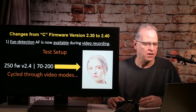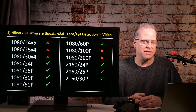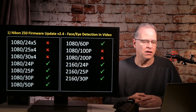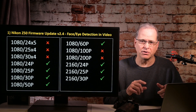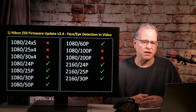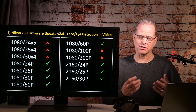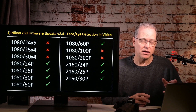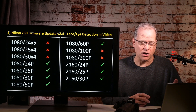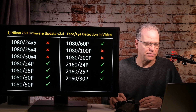All right, let's take a look. And there you have it — the Nikon Z firmware update version 2.4 face/eye detection in video. It doesn't work in any of the slow modes; does not work in 1080p 100p or 200p. All the other modes did detect the face. Plain and simple, that's what I found. If you got something different, leave a note in the comments. Otherwise, just be aware that it does work now, but not on every mode — only the modes with the green checks.